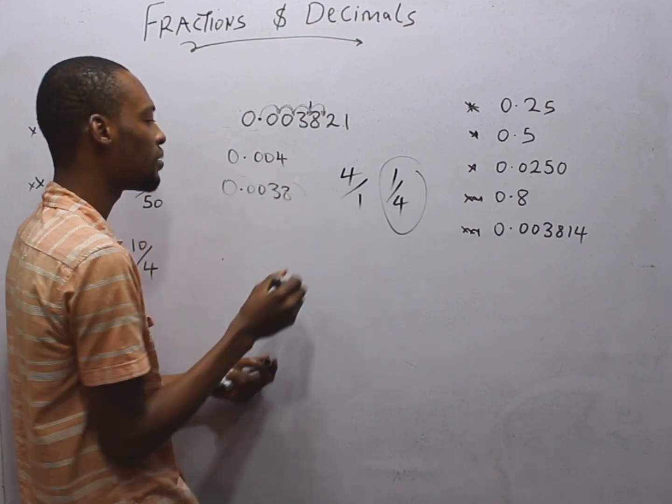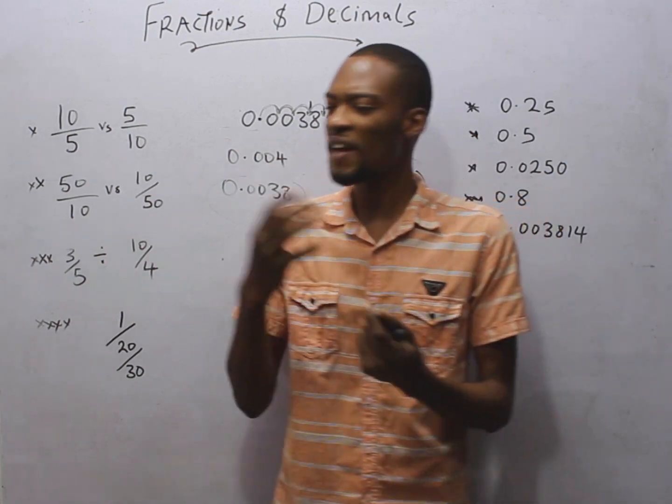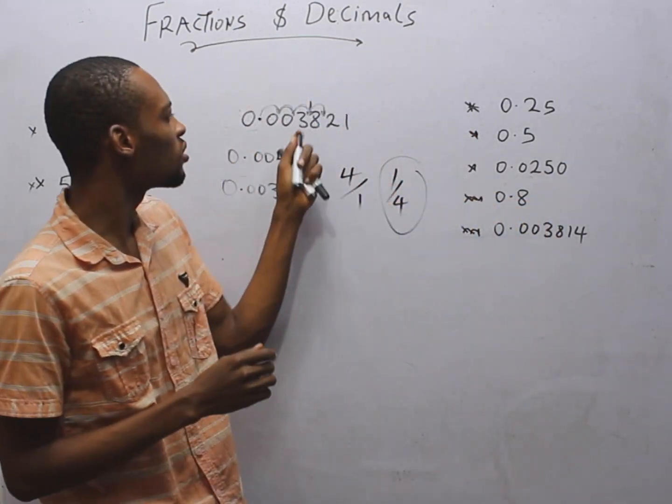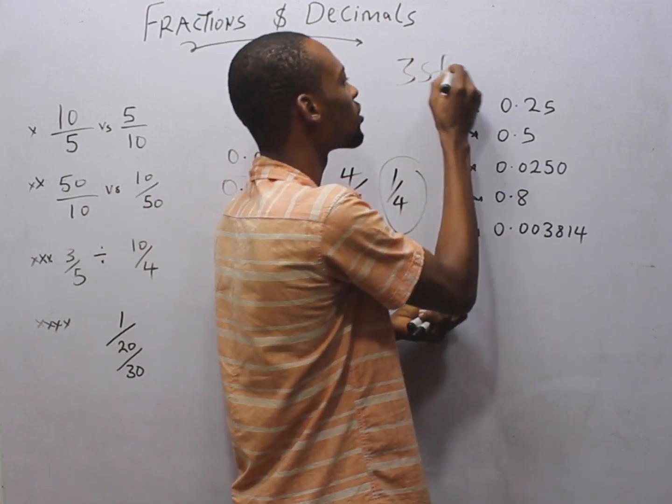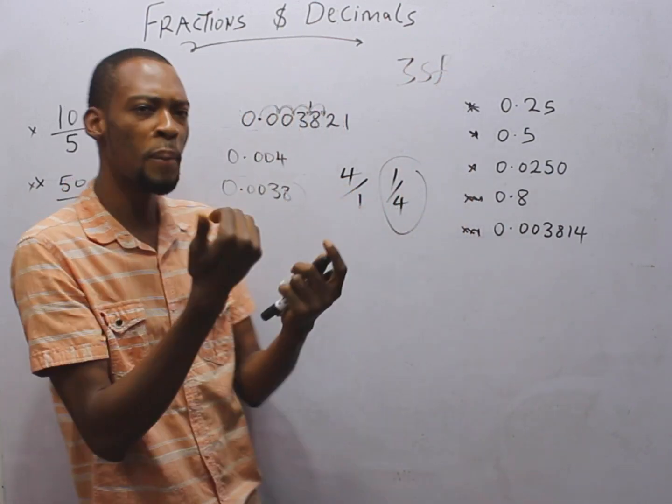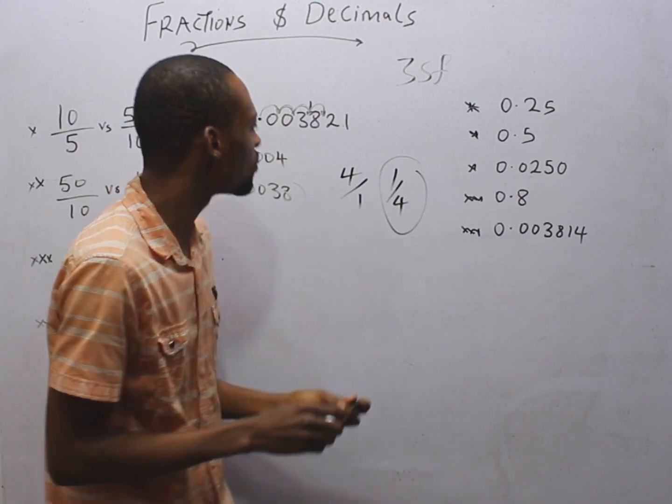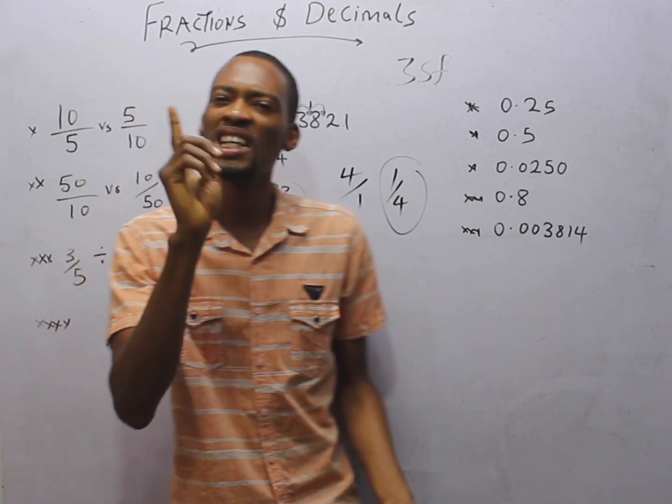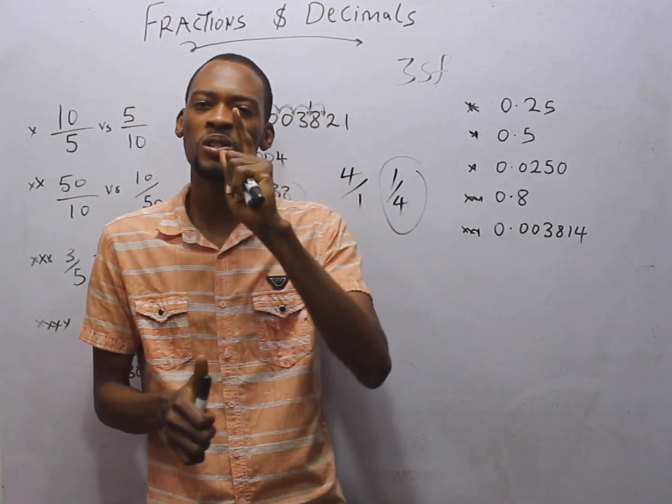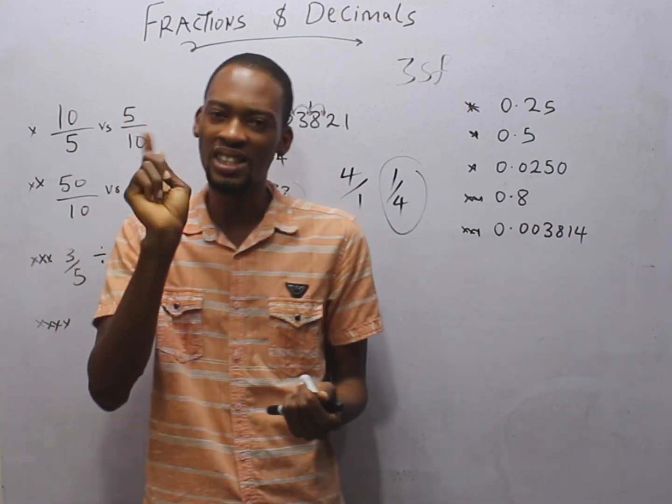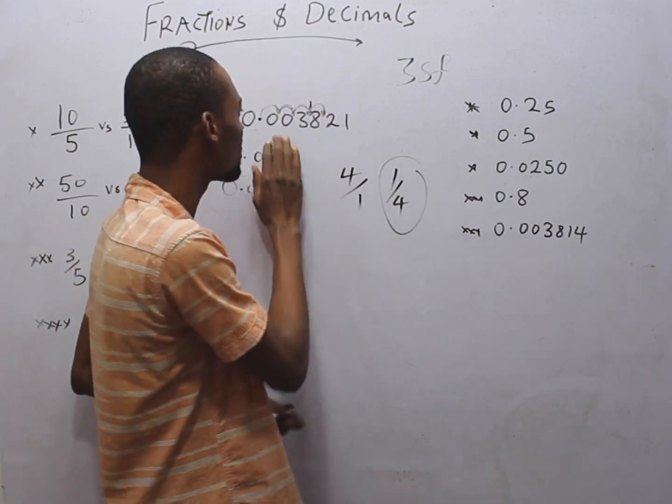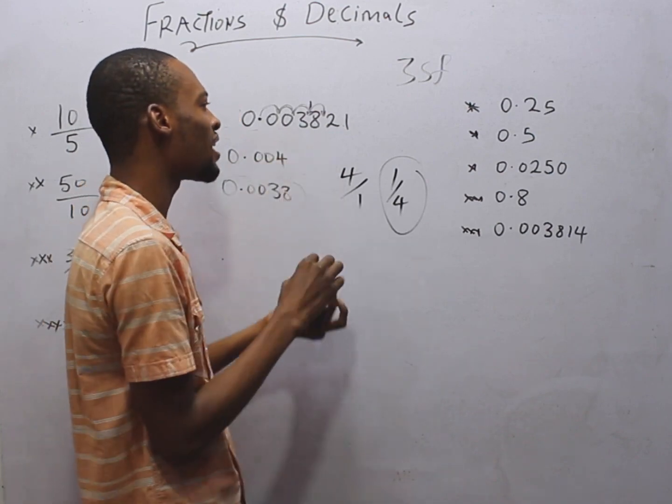So 4 decimal places. But if I say round off to 3 significant figures, it is a different ball game. This is what you do. The first significant figure is the first number that is not 0. So looking at this, the first non-zero number is 3.